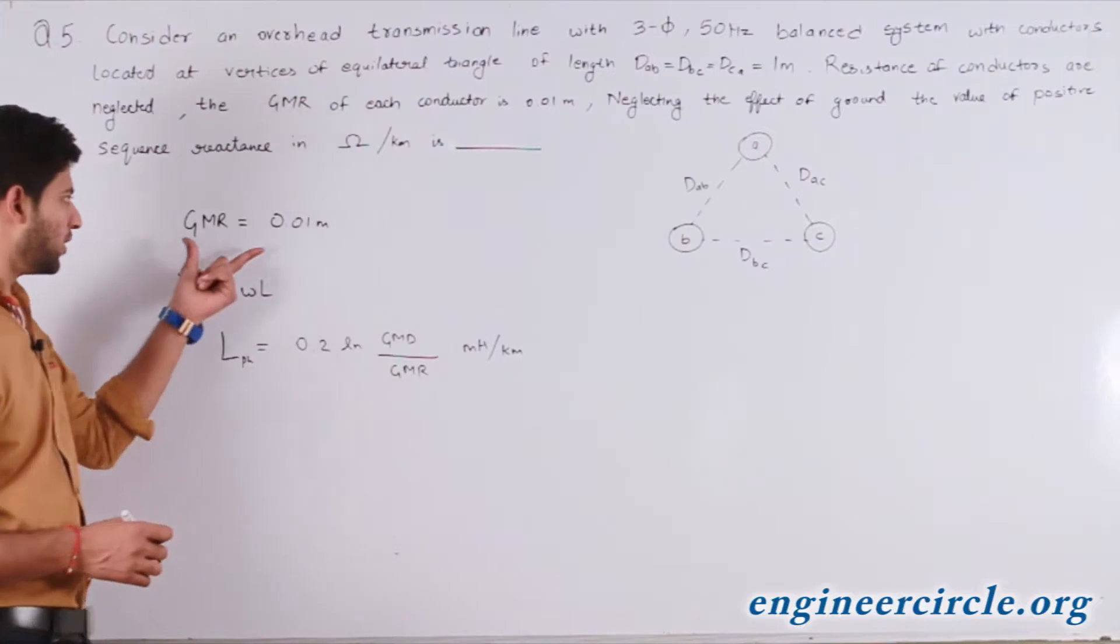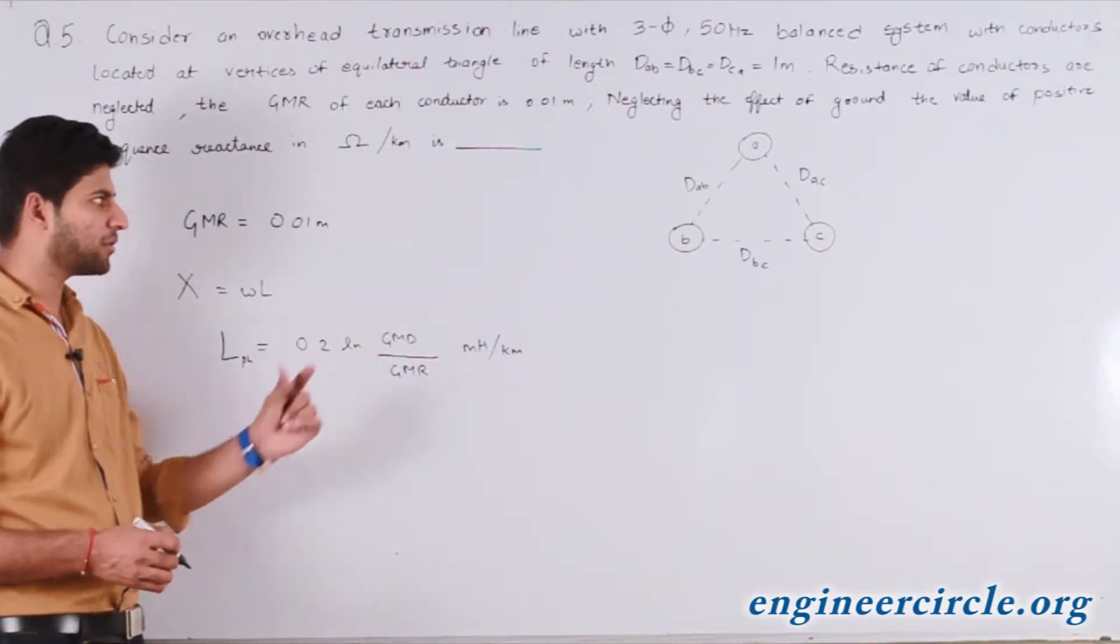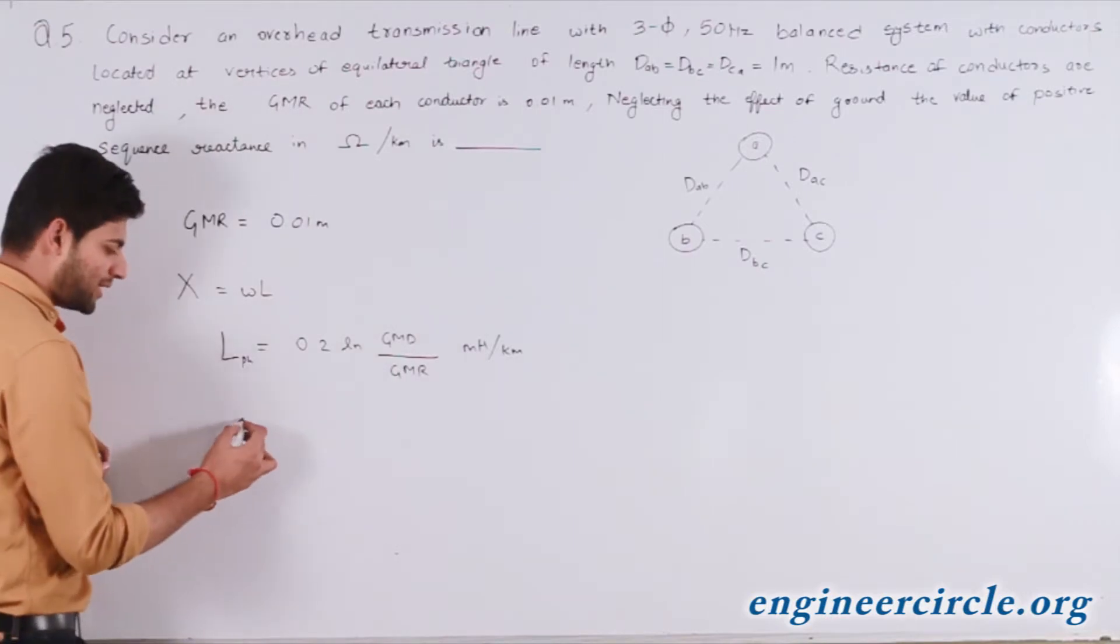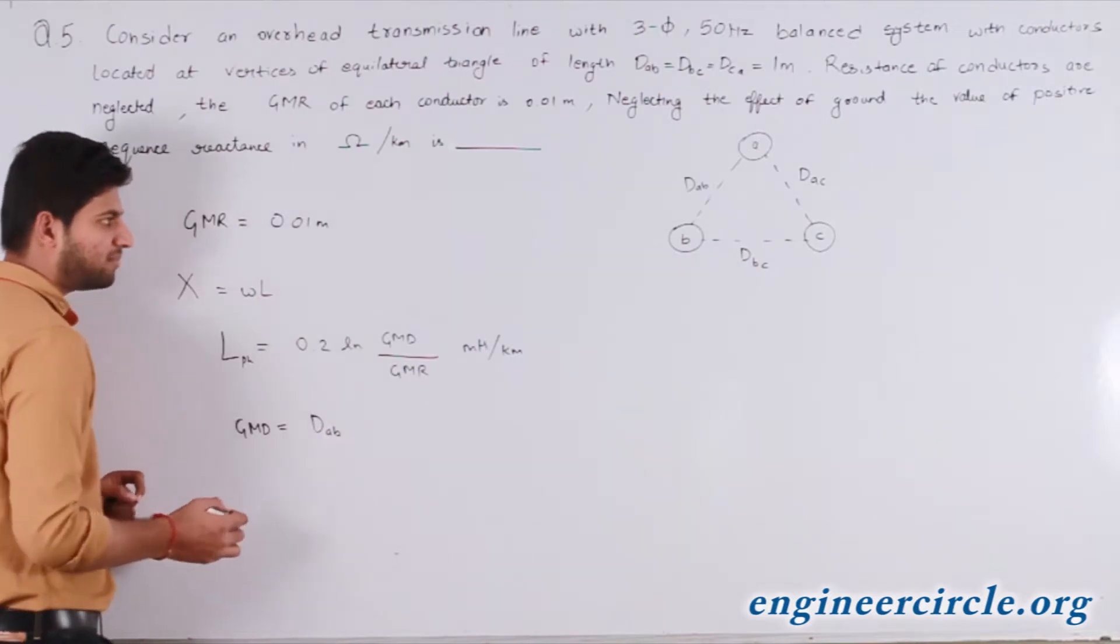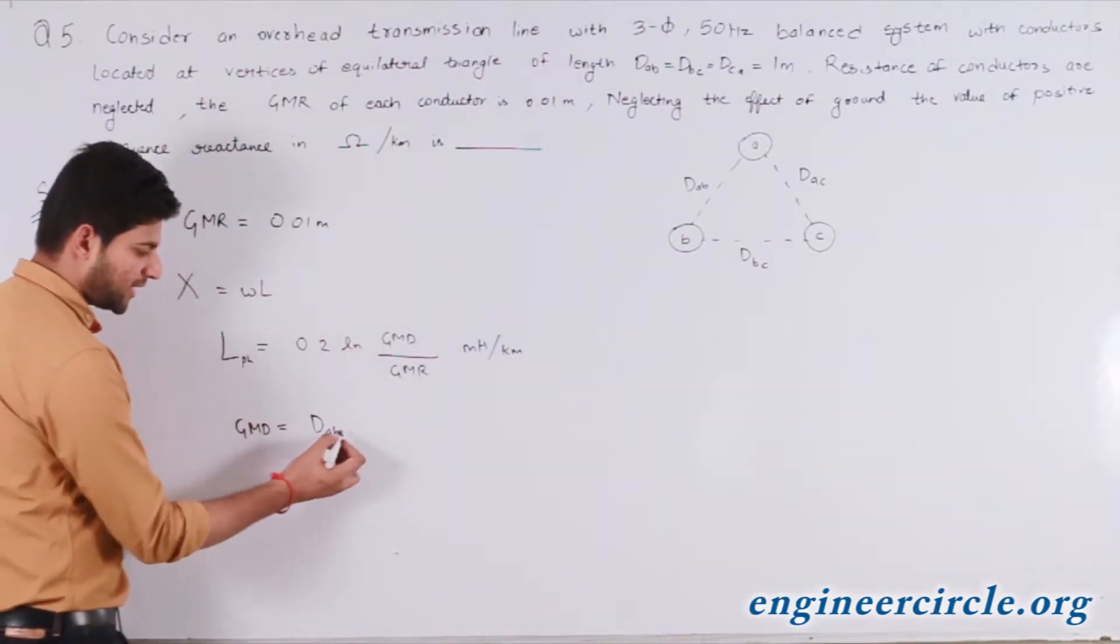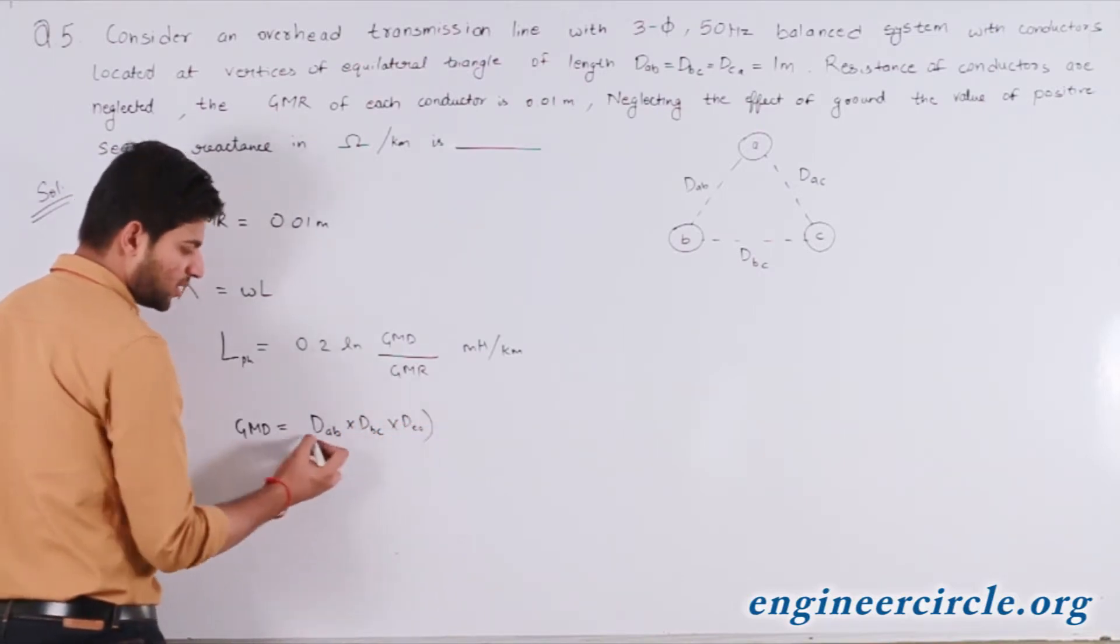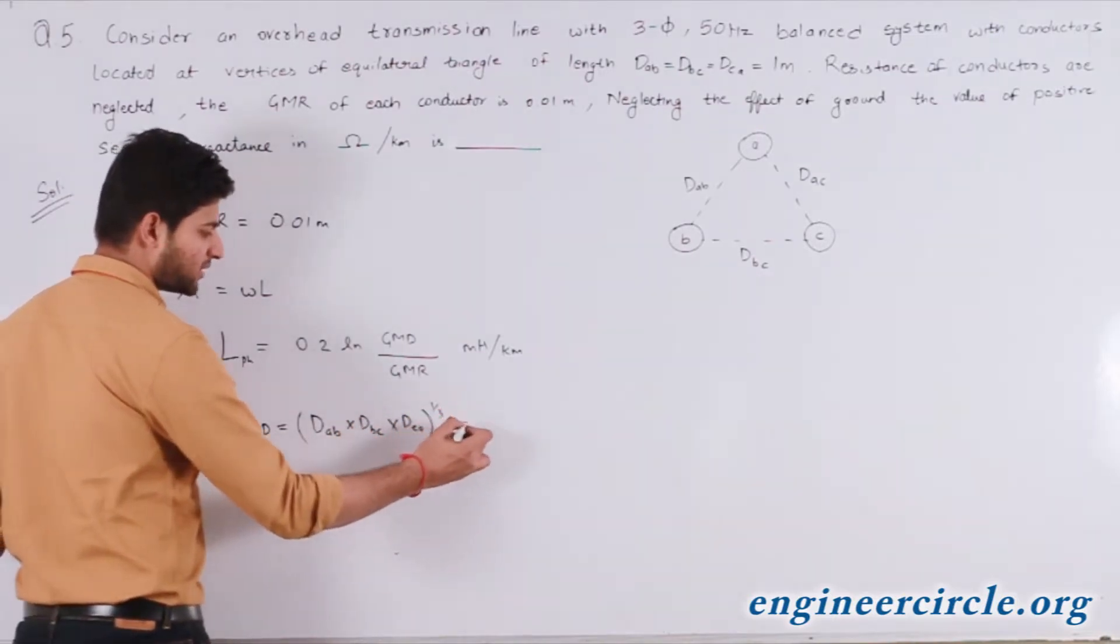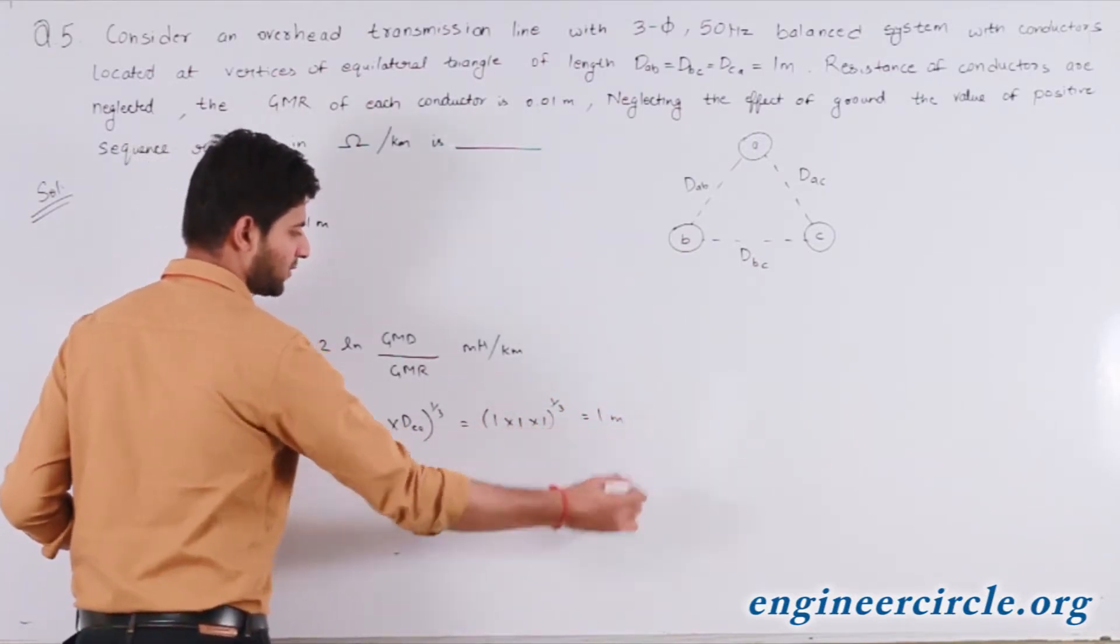Now as we are already known with the value of GMR, we just need the value of GMD to be calculated here. The value of GMD can be calculated as the geometric mean of the distances between all the conductors, that is dAB × dBC × dCA, whole raised to the power 1/3. This will be equal to 1 × 1 × 1 raised to the power 1/3, which is itself equal to 1 meter only.